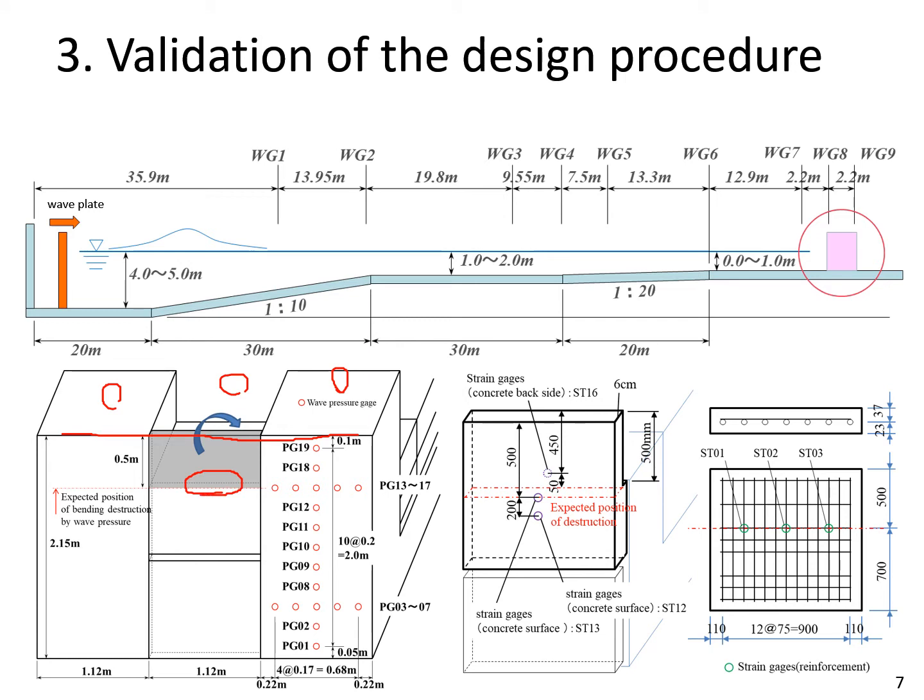The concrete plate is from 6 to 10 cm thick, and the strength is over 22.8 N per square mm, developed in 7 days. Reinforcing bars are D6 of SD295A, and the distance between the bars is 75 or 150 mm, or unreinforced.